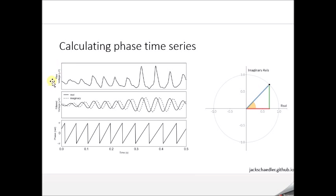Starting with the raw voltage signal — a beta oscillation from motor cortex that is very non-sinusoidal — when we filter it in the beta range between about 13 and 30 Hz, the filtered signal becomes very sinusoidal. We use a complex Morlet wavelet, the same type used to calculate amplitude in the last lecture, to calculate phase in this lecture. After filtering, our signal is two-dimensional, with a real and imaginary component at each time point.